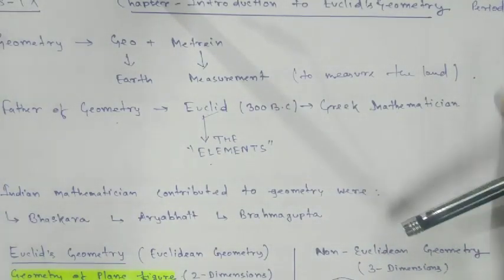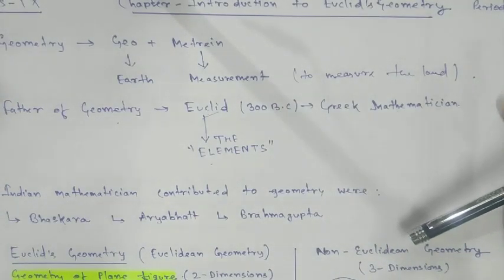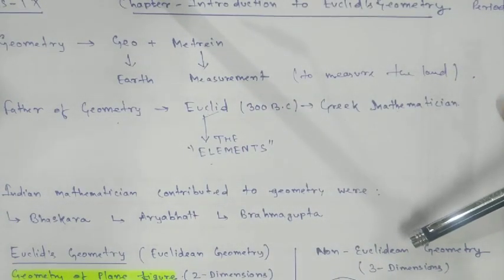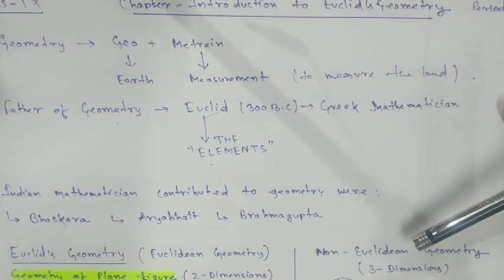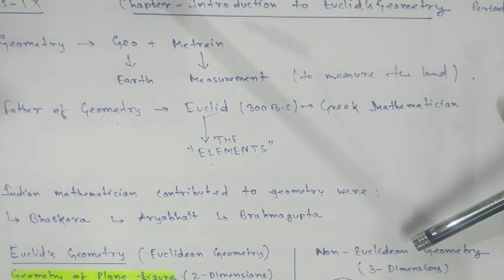Namaste students. Today we are going to start a new chapter, that is Euclid's Geometry. Here geometry means a branch of mathematics. What is geometry? It's a branch of mathematics that studies the size, shape, and dimension of things.